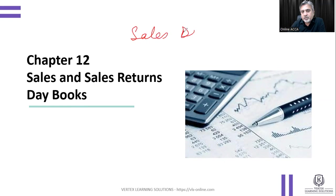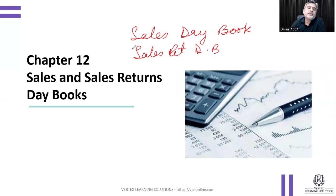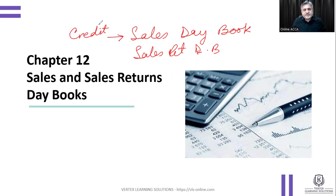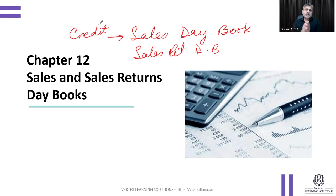There are two books: the sales daybook and the sales return daybook. The sales daybook will always only include credit sales — that's the first thing you should remember. Sales can be made in two forms: either you sell goods on cash or on credit. When you sell goods on cash, those are recorded in the cash book. When you sell goods on credit, those are recorded in the sales daybook.